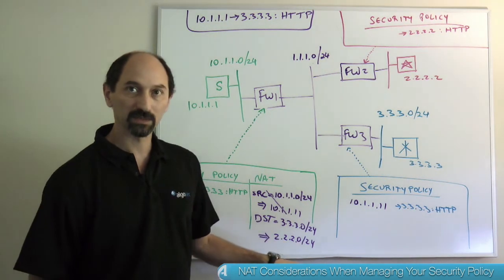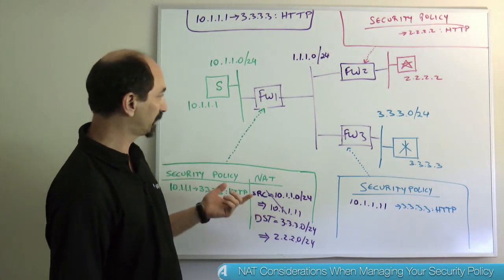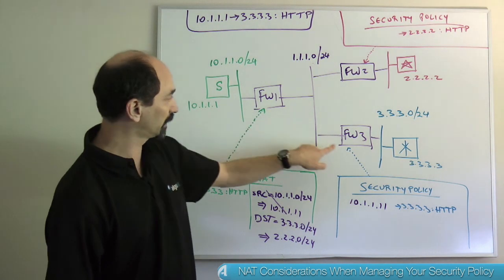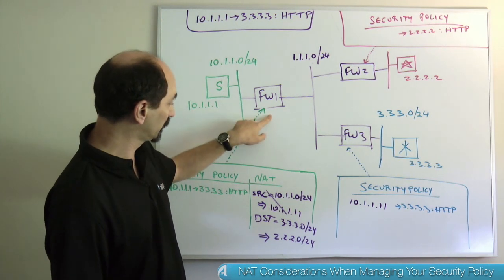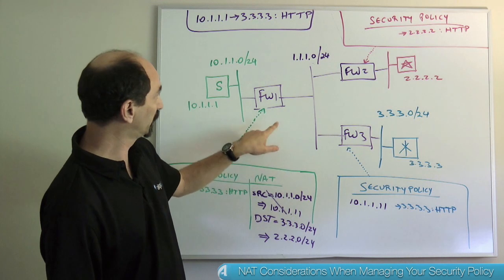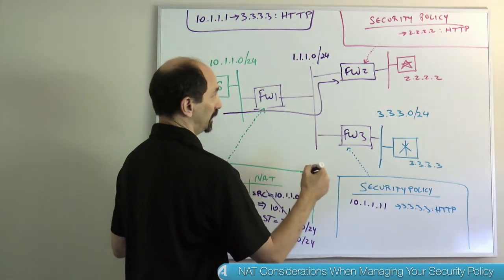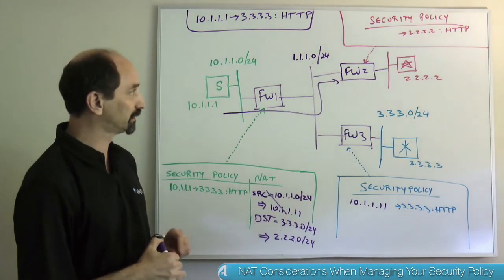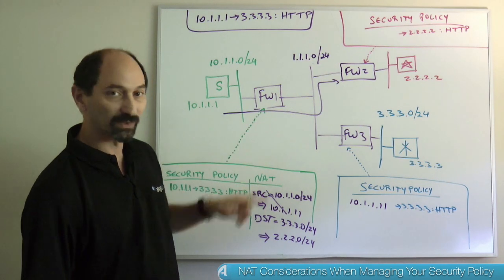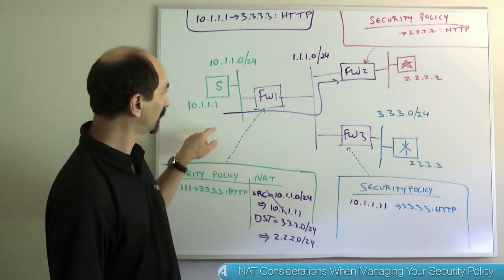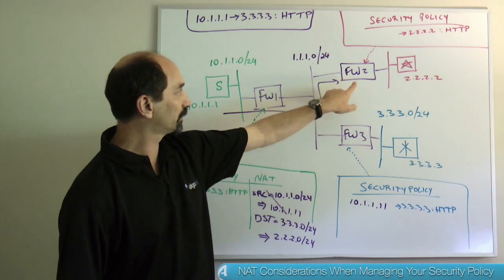Firewall one is actually translating the whole subnet 3.3.3.0, mapping it one-to-one to the subnet 2.2.2.0/24. If that's the case, two things happen. First, the path you considered in the first example — going through firewall one and then firewall three — is no longer correct. The traffic goes through firewall one, the destination changes to 2.2.2.3, and then the flow of traffic hits the server in the red network. Understanding the NAT policy on firewall one really determines the path that the traffic will take through the network.